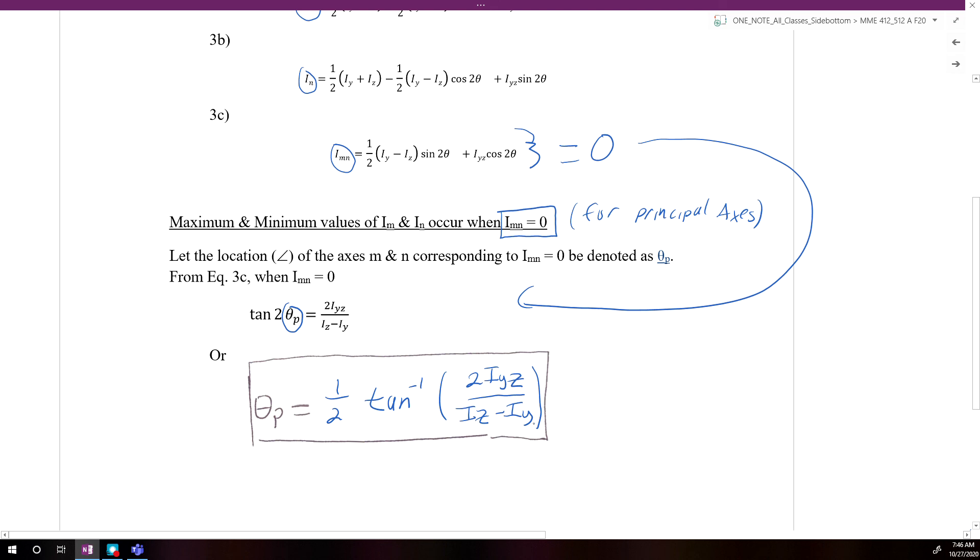In conclusion, in order to find where your principal axes M and N are, you need to first find IYZ, IZ, and IY. Once you have these three terms, you can then plug them in to find your principal axis theta P, which would give you the angle relative from the YZ coordinate system to the M and N principal axes.